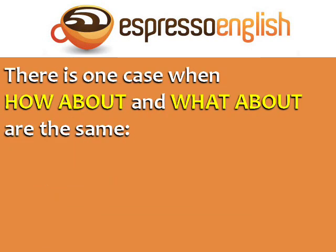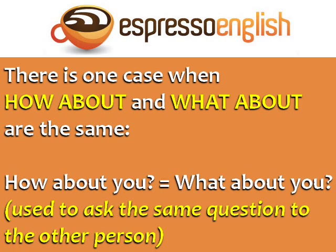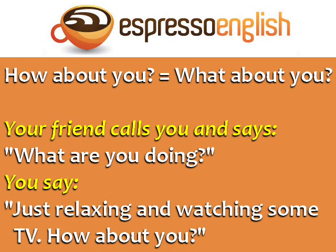There is one case when 'how about' and 'what about' are the same. When you ask 'how about you?' or 'what about you?' — this is used to ask the same question to the other person. For example, if your friend calls you and says 'what are you doing?' you say 'just relaxing and watching some TV — how about you?'